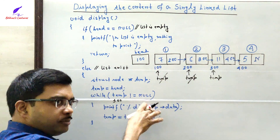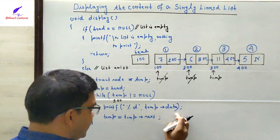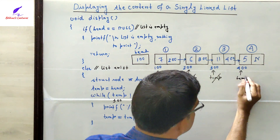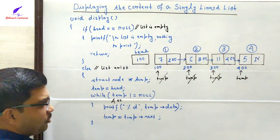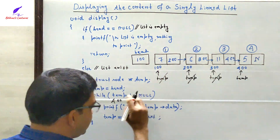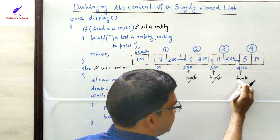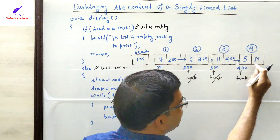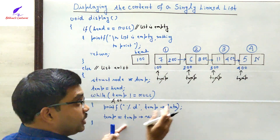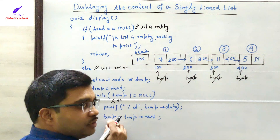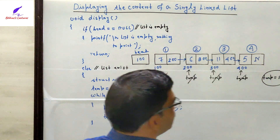Now temp is 300 (third node), which is not equal to null — a valid node — so its data part (11) is printed. Temp is then shifted: temp->next is 400, so temp becomes 400, pointing to the last node. At 400, it is again not null, so data part 5 is printed. After printing, temp = temp->next is executed. The next part of 400 is null, so the new value of temp becomes null.